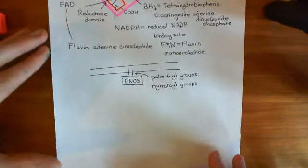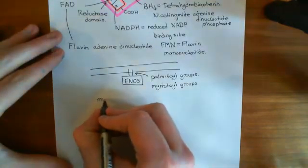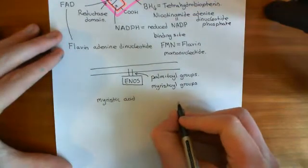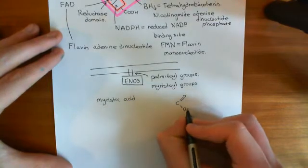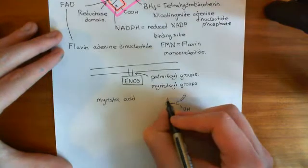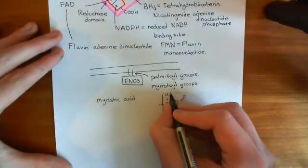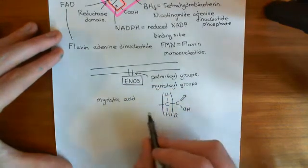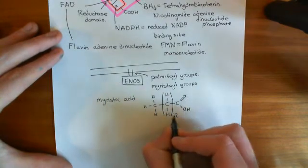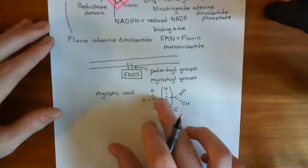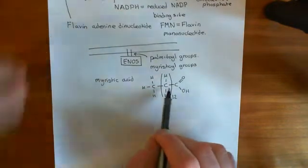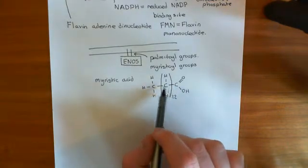Myristoyl groups are where myristic acid has been added. Myristic acid is a 14-carbon carboxylic acid: a carboxylic acid group followed by 12 methylene groups — written as (CH₂)₁₂ — and then a terminal methyl group. So there are 2 carbons in the acid portion plus 12 more, giving 14 overall. Palmitic acid is a 16-carbon carboxylic acid, with a carboxylic acid group, 14 methylene groups — (CH₂)₁₄ — and a terminal methyl group.